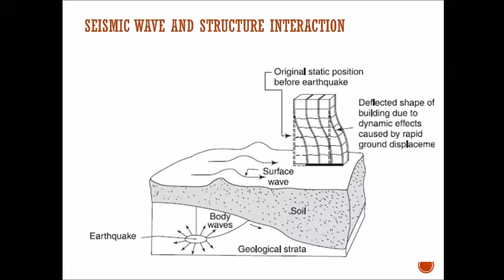Once the surface waves come and hit the structure, you can see the bottom of the structure — the foundation along with the bottom part of the structure — is moved along with the wave. However, the top part does not have any forces applied directly to it, and hence it has to move according to how the bottom part is behaving. This becomes a dynamic response of the structure — the deflected shape.